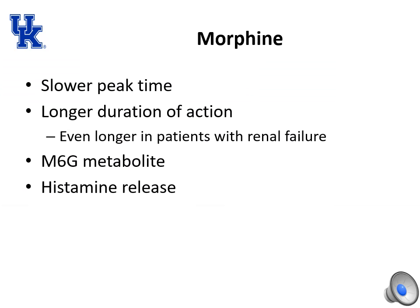Morphine has a slower peak time but a longer duration of action, and this duration is even longer in patients with renal failure. The M6G metabolite will accumulate in patients with renal failure or insufficiency, and morphine is a major contributor to histamine release.